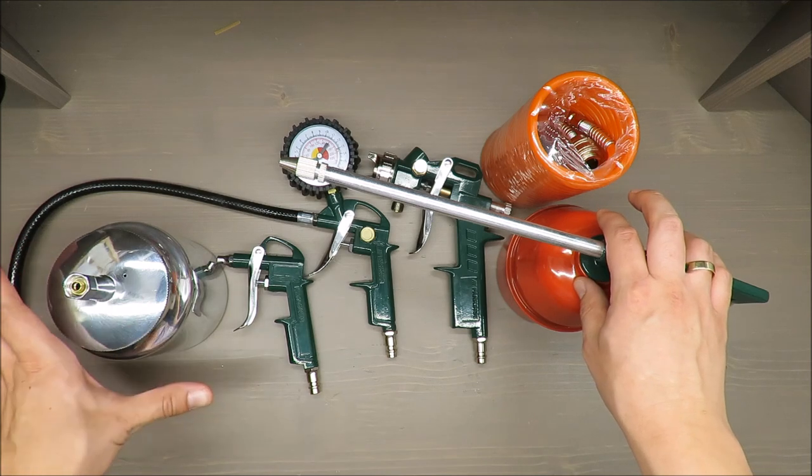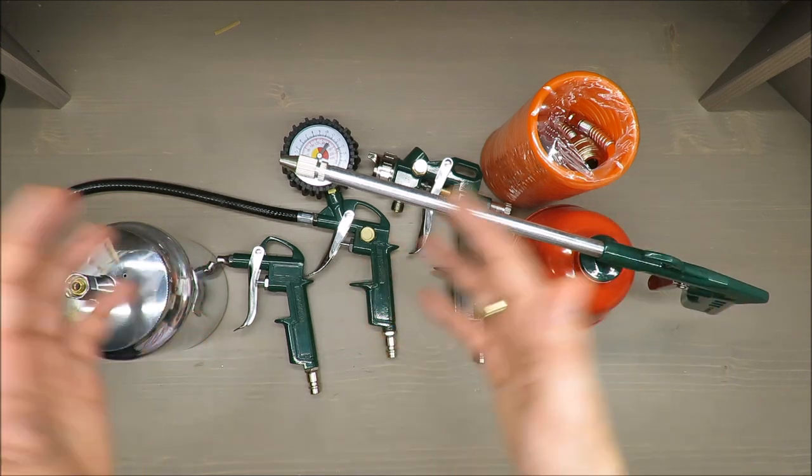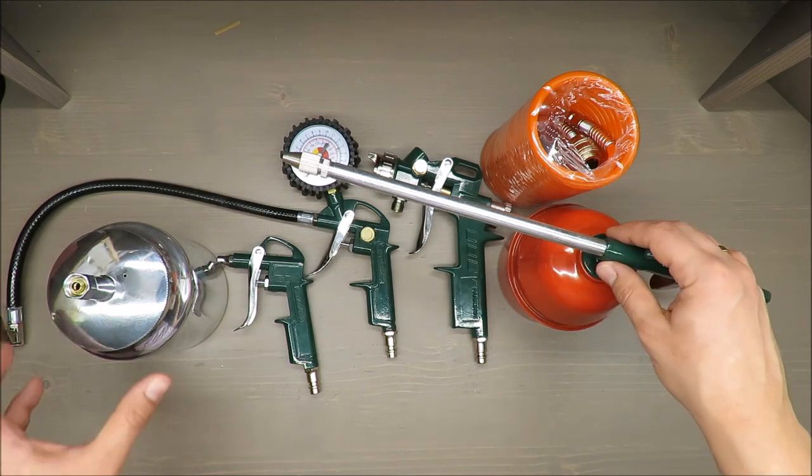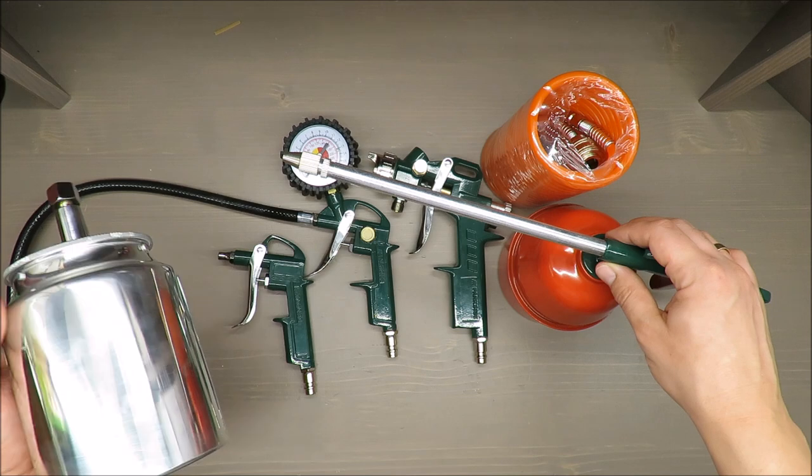You've got a five accessories set which includes an air painting spray gun, air spray gun, air blow gun, air tire inflator, and air hose.